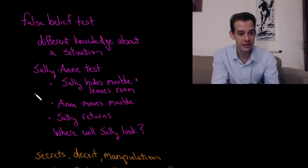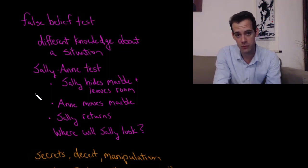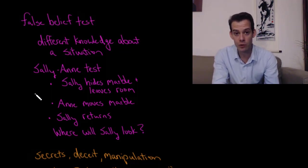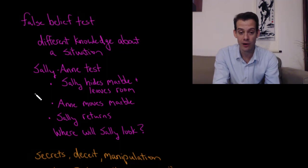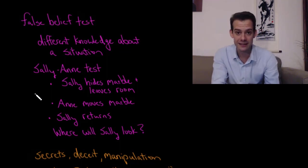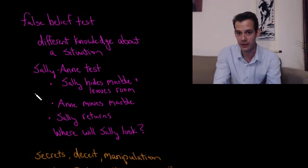Of course, the correct answer is that Sally will look in Sally's basket because that's where she put the marble and she doesn't know that it's been moved. But children who are still showing this egocentrism, who aren't quite able to develop the idea that different people have different thoughts, the children will think Sally will look in Ann's basket because the child knows that the marble is in Ann's basket. They're not able to recognize that Sally doesn't know that. Sally wasn't there when Ann moved it. This is one way we can assess the development of theory of mind in young children.